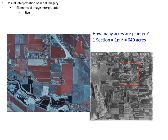If you've ever looked at an aerial image from the west, you know that everything is broken up into a square grid. On the right you see a very good example — the PLSS grid where one section is one mile by one mile, which is 640 acres. You will then see quarter sections, which are half a mile by half a mile and 160 acres.